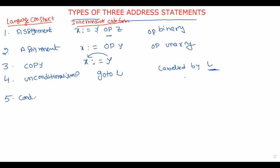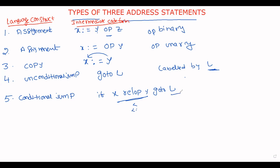The next one is the conditional jump statement. If you write a statement of the form 'if x relop y goto L', here relop is the relational operator — for example, x less than y, x less than or equal to y, greater than y, or greater than or equal to y. It checks the condition; if the condition is true, then only it goes to the statement with label L. That is the conditional jump.